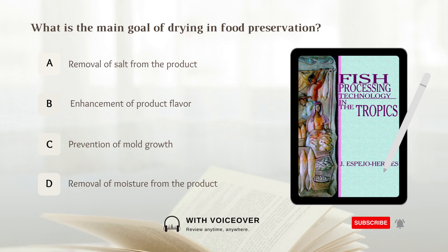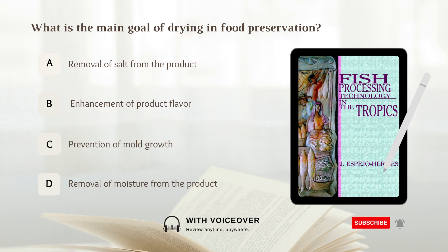What is the main goal of drying in food preservation? A. Removal of salt from the product. B. Enhancement of product flavor. C. Prevention of mold growth. D. Removal of moisture from the product. Answer: D. Removal of moisture from the product.